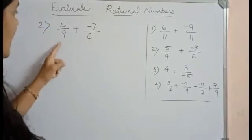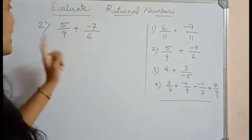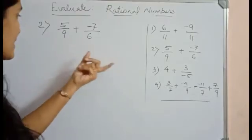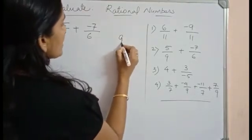Look at the next question: 5/9 + (-7/6). Here the denominators are different. So what we have to do first is to take the LCM of 9 and 6. Let's take the LCM.